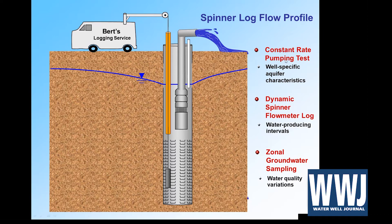We conduct a constant rate test — pumping at a constant rate, maybe for an eight- or ten-hour day, not 24 or 72 hours — and we can get some site-specific aquifer characteristics estimated from that. We run this log so we can get our different water-producing intervals and where the gallons per minute are coming in. Then we can use a sampling tool to grab water quality samples from these different depth intervals, so now we know a whole lot more than we did without spending a whole bunch of money.